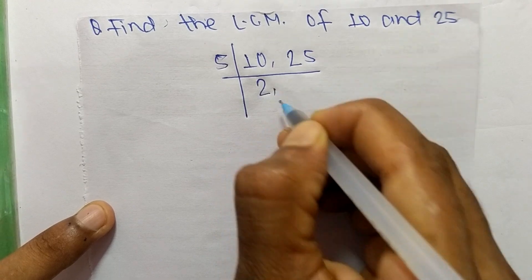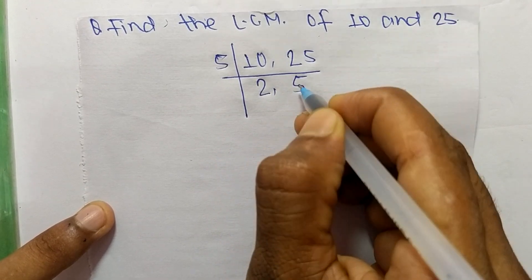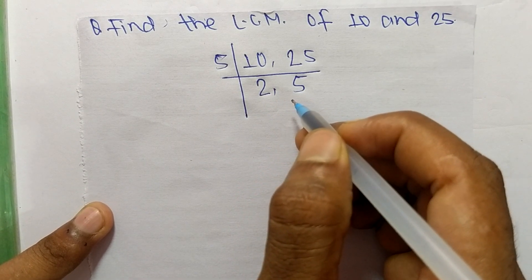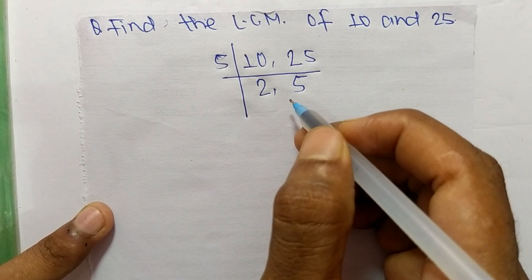So 5 times 2 means 10 and 5 times 5 means 25. So we get here 2 and 5 which are not exactly divisible by same number.